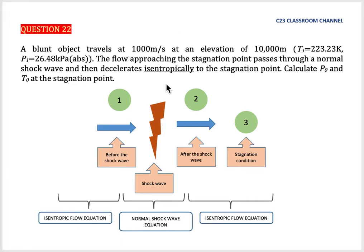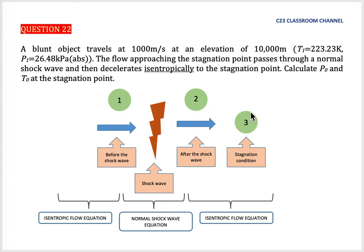From this situation, you need to understand how to imagine the flow. The flow travels at 1,000 meters per second at point number 1. Then this flow passes through a normal shockwave, so a normal shockwave occurs at this point. After the normal shockwave, the flow still continues. Then it decelerates, and after the shockwave it decelerates and becomes a stagnation condition.